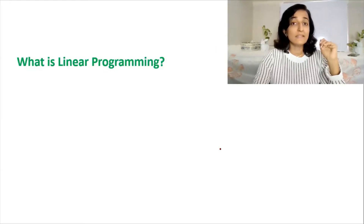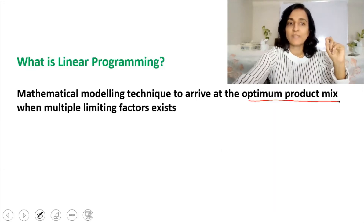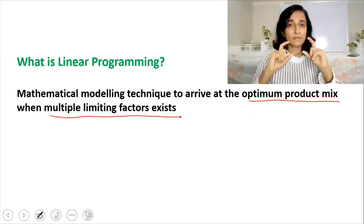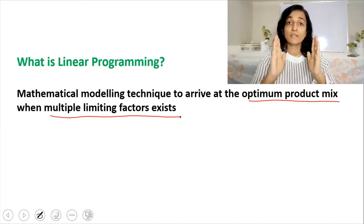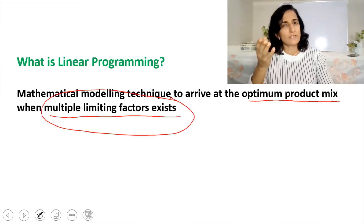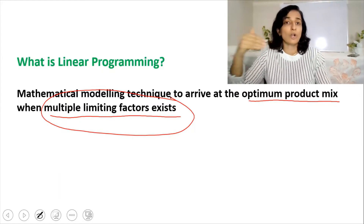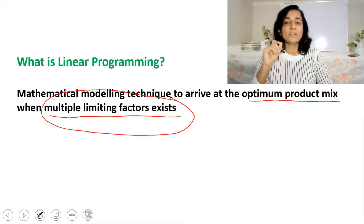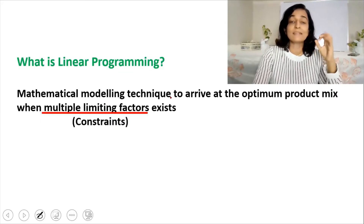What exactly is linear programming? It is a mathematical modeling technique to arrive at the optimum product mix when multiple limiting factors exist. It is a method to arrive at the optimum product mix — how much quantity of each product is to be produced, and that too, which will maximize your profits. For a single limiting factor, we calculate the contribution per hour or contribution per kg of each product and rank the products. But when multiple limiting factors occur, we have to adopt linear programming. These multiple limiting factors are also known as constraints.